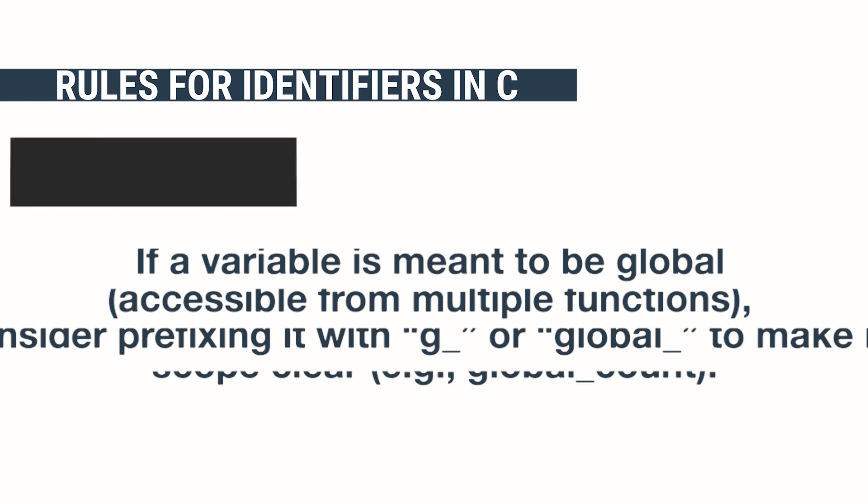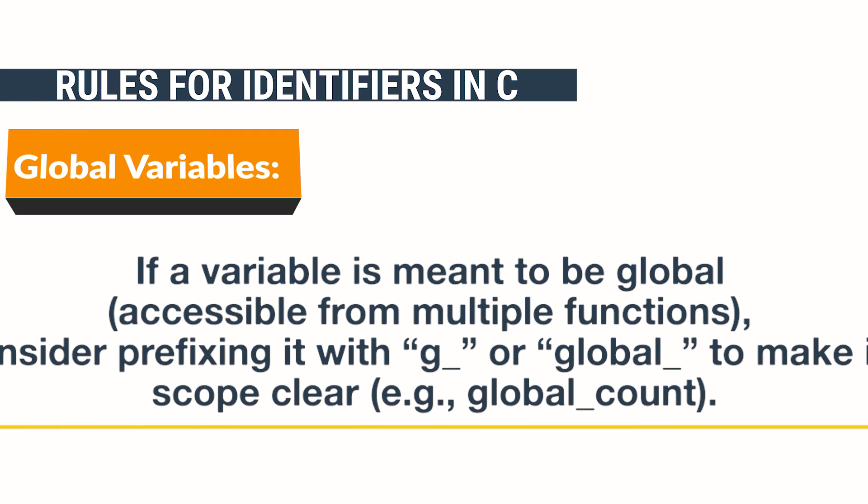Global variables: If a variable is meant to be global, accessible from multiple functions, consider prefixing it with g_ or global_ to make its scope clear. For example, global_count.